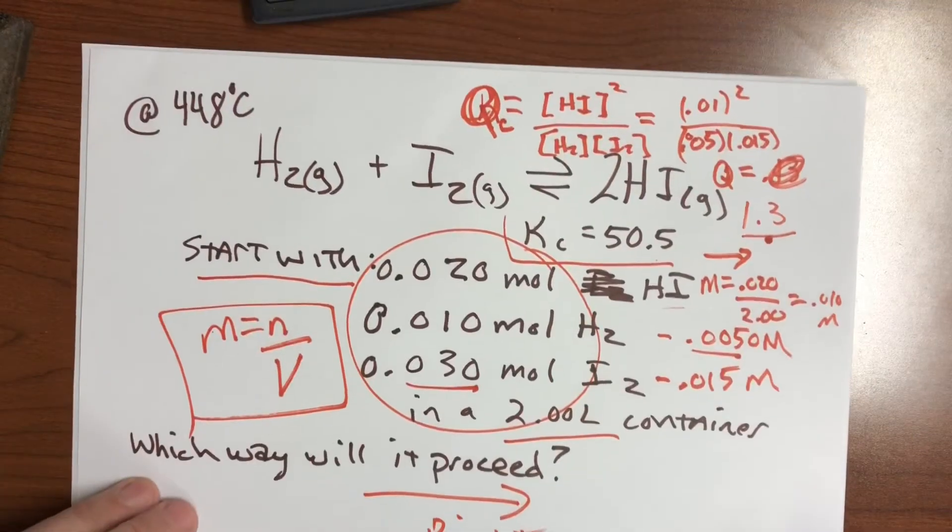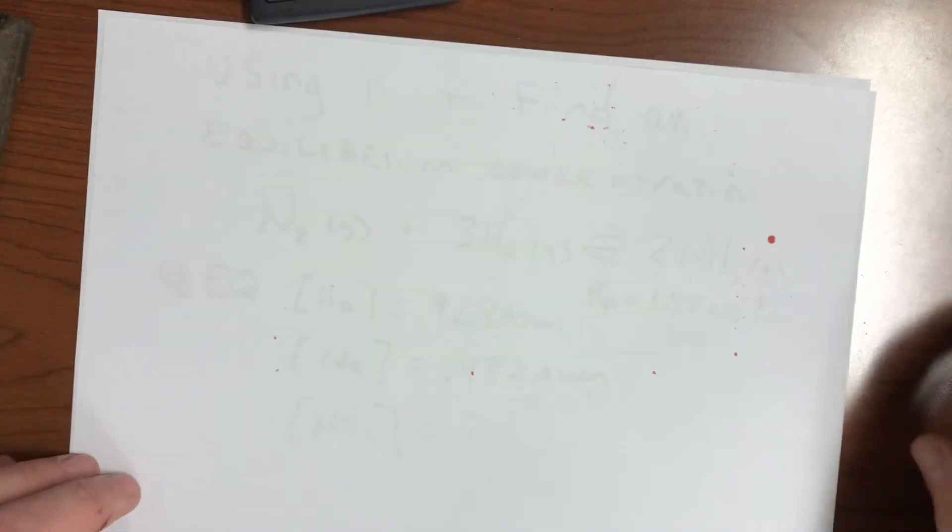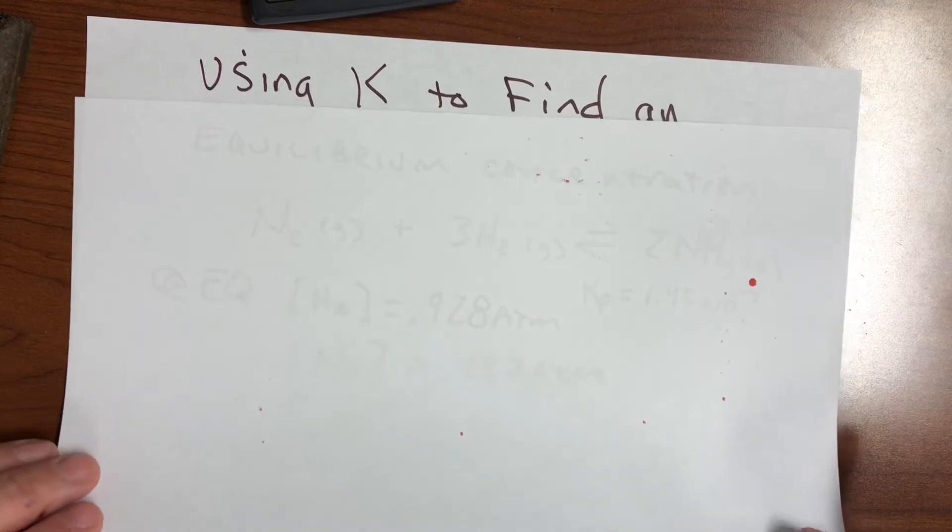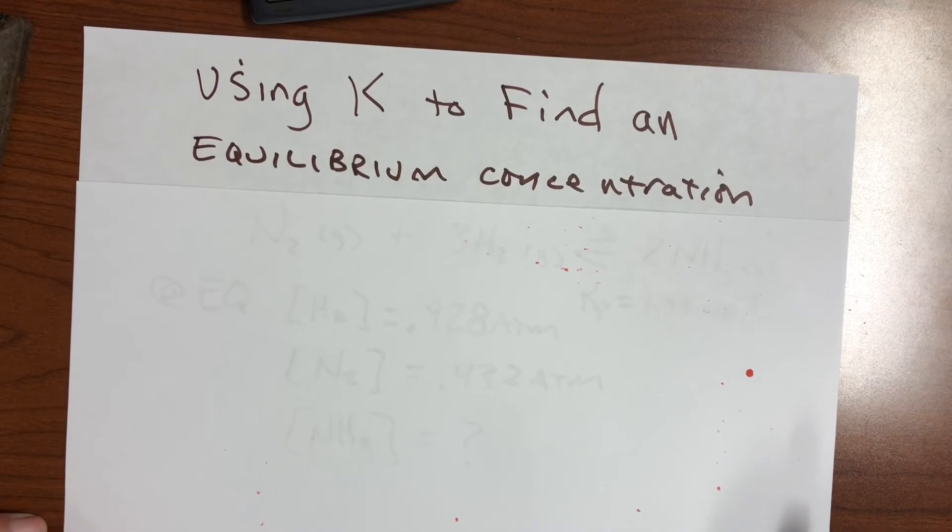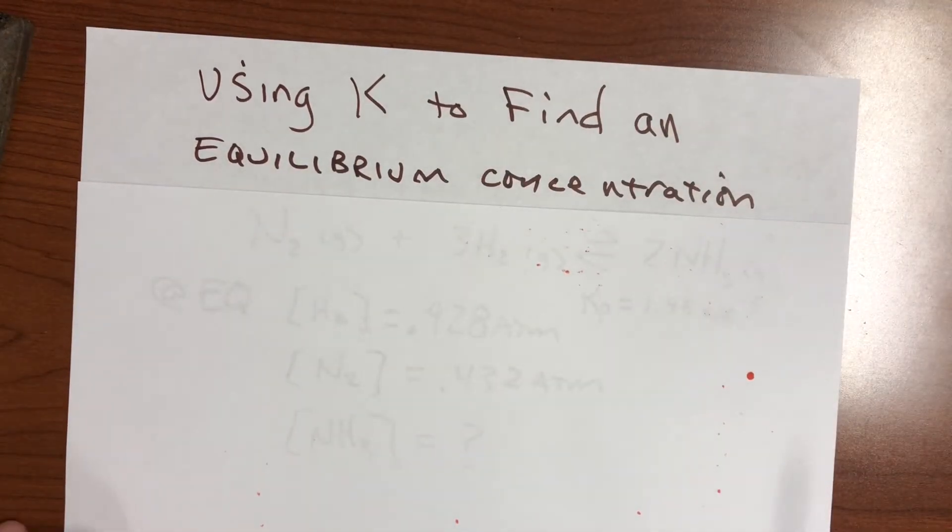Now, one final problem here. It's only related in that it's a math problem involving K's, but it's pretty straightforward. We haven't done a problem like this yet in class, so we're going to use K to find an equilibrium concentration. So let's say you know some of the concentrations and not others, but you do know it's at equilibrium.